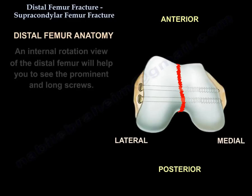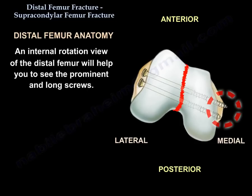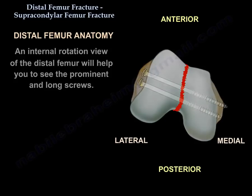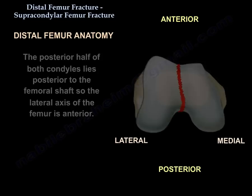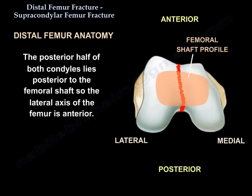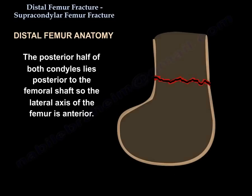An internal rotation view of the distal femur will help you to see prominent and long screws. The posterior half of both condyles lies posterior to the femoral shaft, so the lateral axis of the femur is anterior.